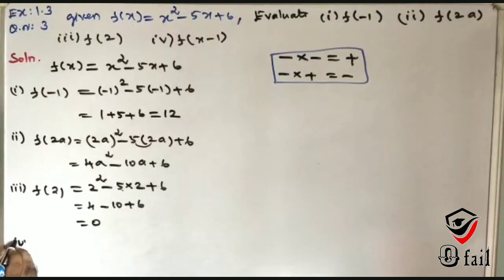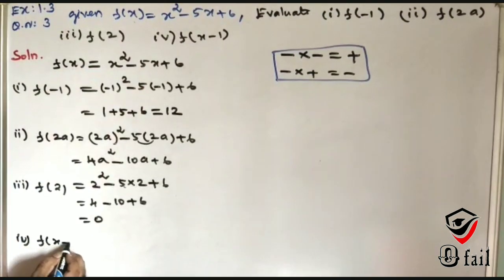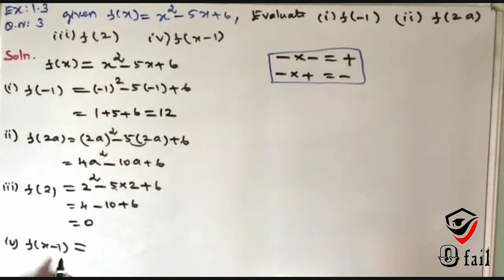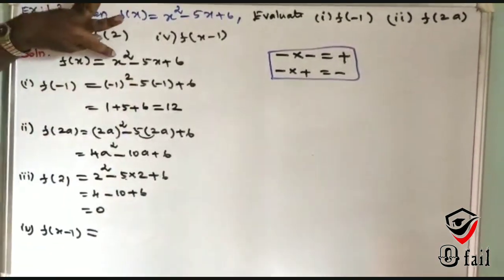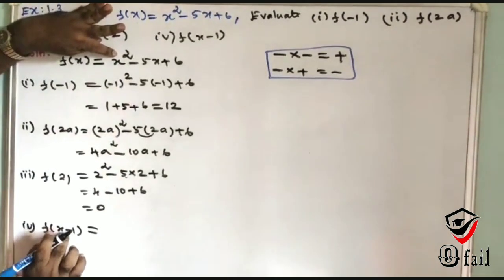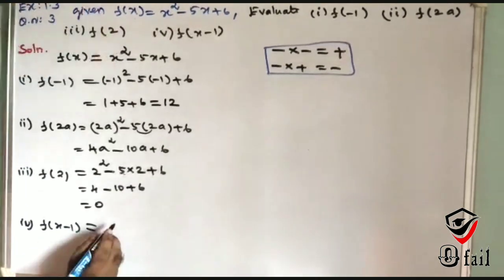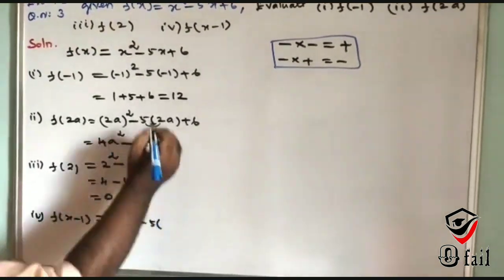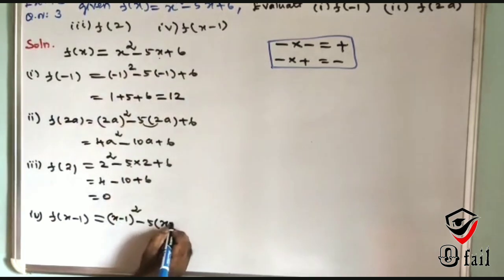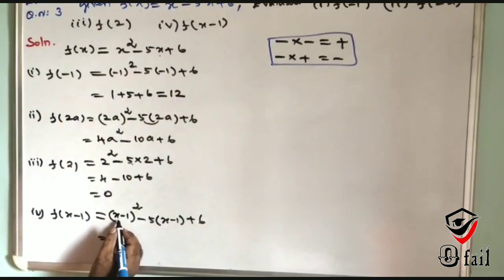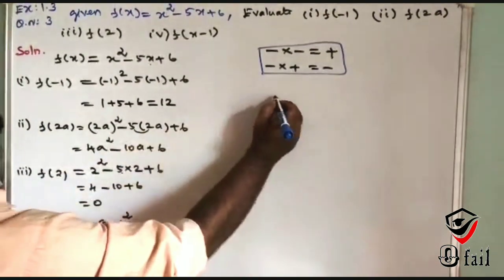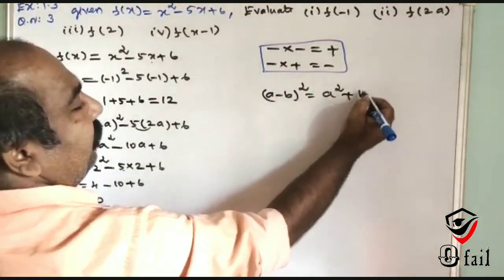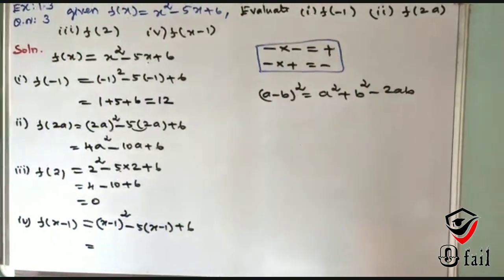Fourth problem: F of X minus 1. Replace X with X minus 1, giving us X minus 1 whole squared minus 5 into X minus 1 plus 6. Now apply the formula: a minus b whole squared equals a squared plus b squared minus 2ab. This is the key formula.